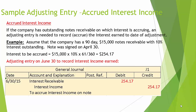Here is a sample adjusting entry for accrued interest income. If the company has outstanding notes receivable on which interest is accruing, an adjusting entry is needed to record the interest earned to the date of adjustment. Example: assume that a company has a 90-day, $15,000 notes receivable with a 10% interest outstanding. The note was signed on April 30th. Interest to be accrued is calculated as follows: $15,000 times 10% times 61/360 days equals $254.17. The adjusting entry on June 30th to record interest income earned would debit interest receivable $254.17 and credit interest income $254.17.